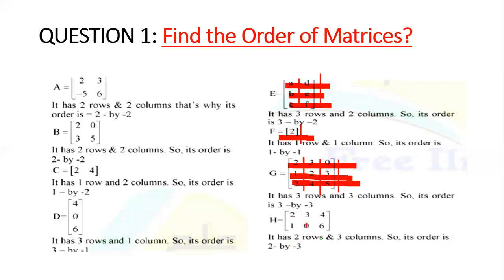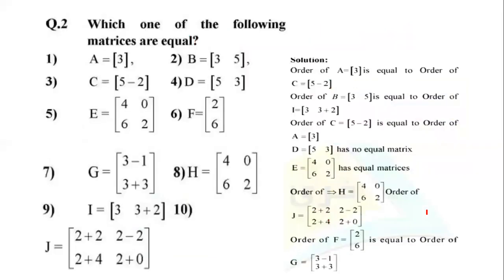Now in this final case, I have 3 columns and 2 rows. So the order is 2×3.